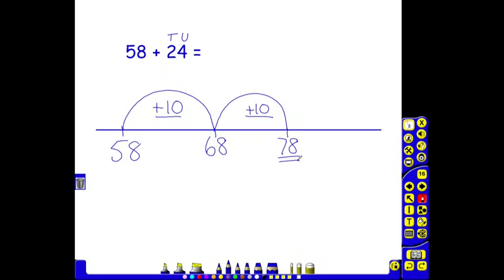Children at this point would be encouraged to recognize that they need to bridge through a 10. Remember in year 1 and 2 skills, bridging through 10 means jumping to the next number that ends in a 0. This is a multiple of 10. The number after 78 that ends in a 0 is 80. To get to 80 from 78 we add 2.